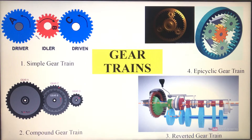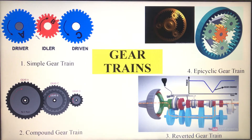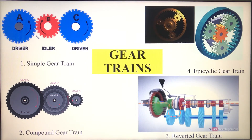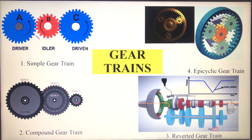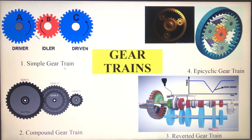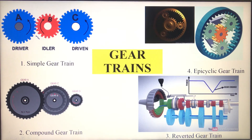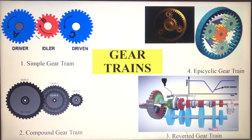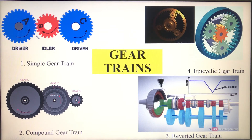Next we will discuss about the different types of gear trains. There are a total of four types: the first one is simple gear train, the second one is compound gear train, the third one is reverted gear train, and the fourth one is epicyclic gear train.